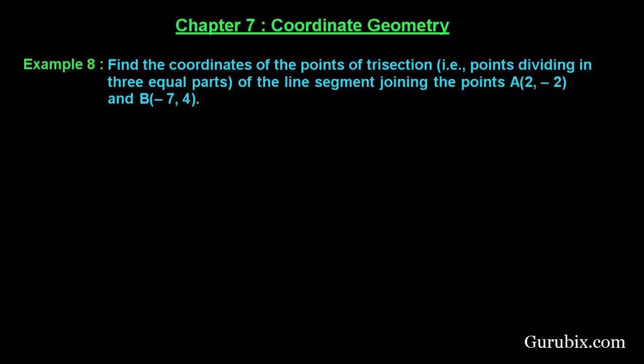Let us solve example number 8 of chapter 7. The example says: find the coordinates of the points of trisection — meaning points dividing into 3 equal parts — of the line segment joining the points A(2, -2) and B(-7, 4). This is a very important question.